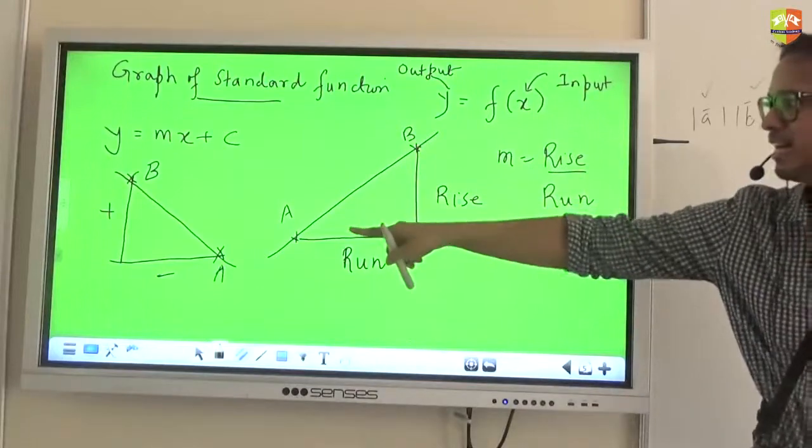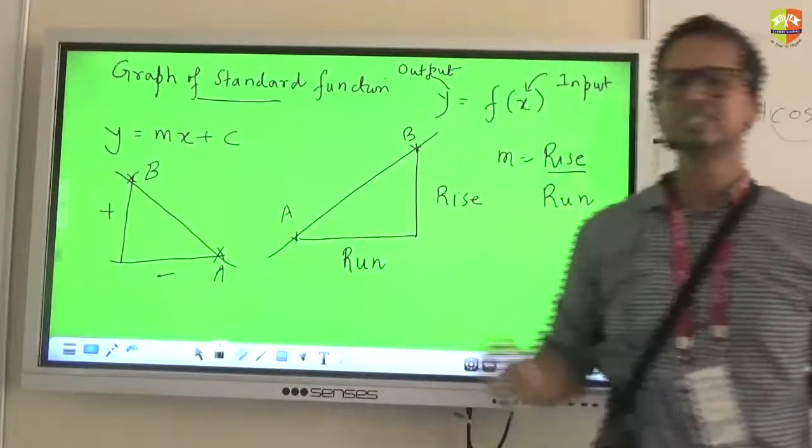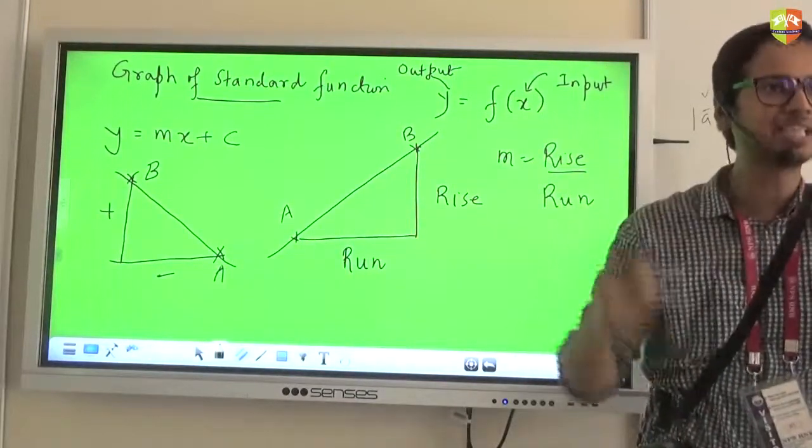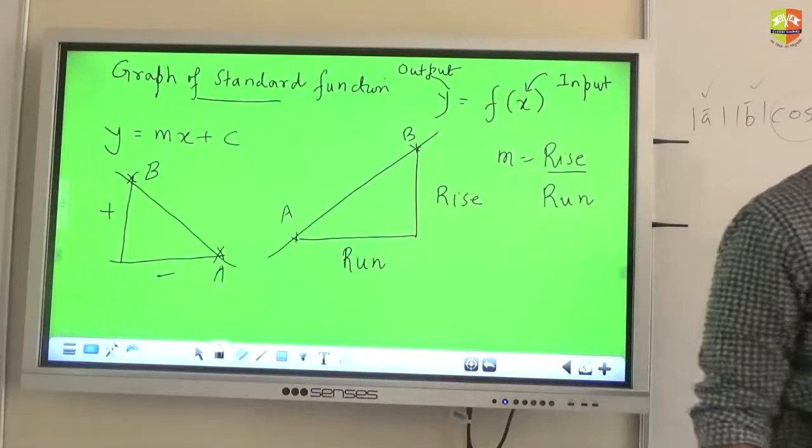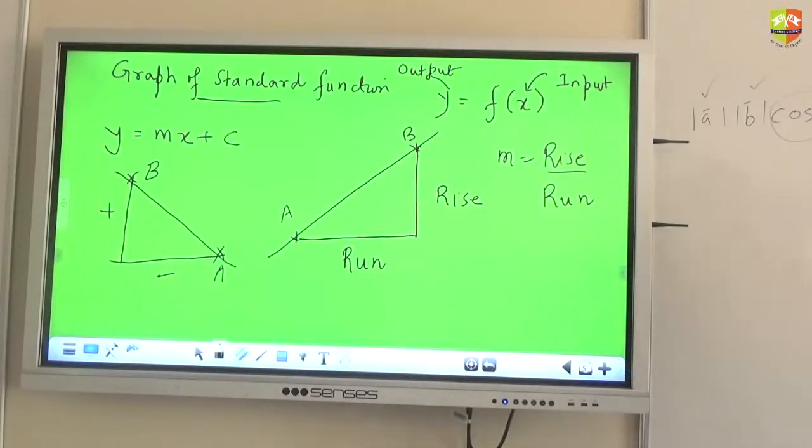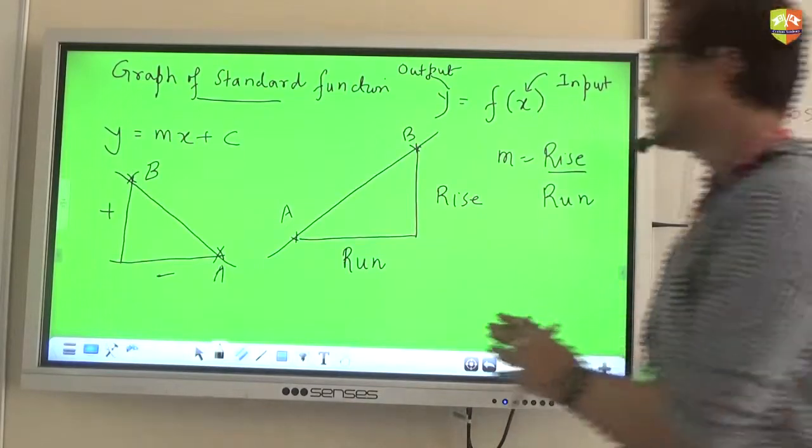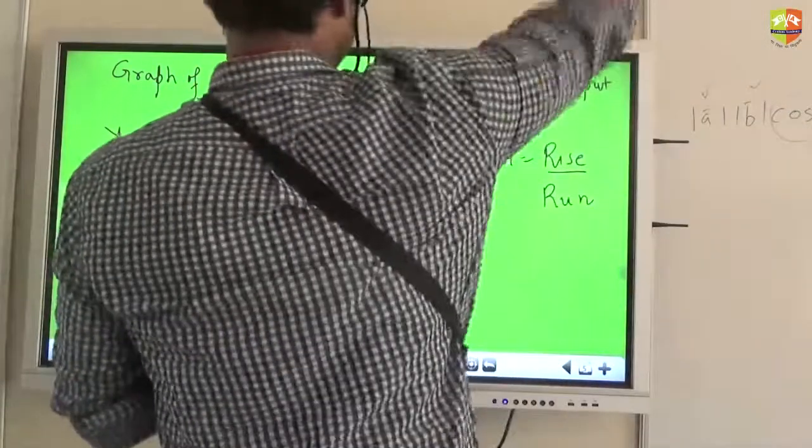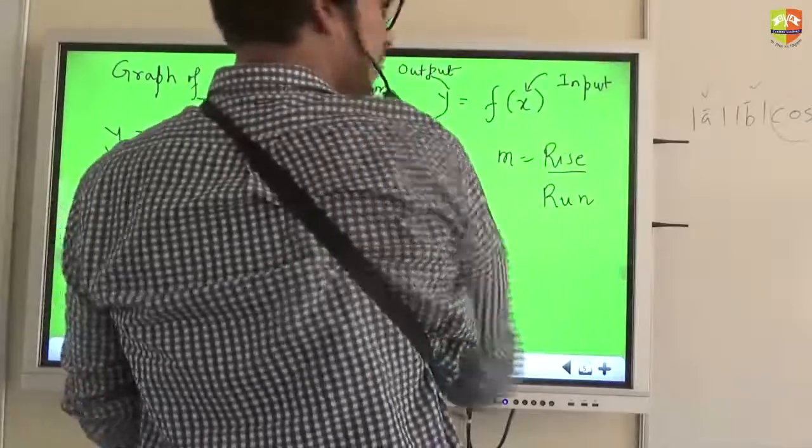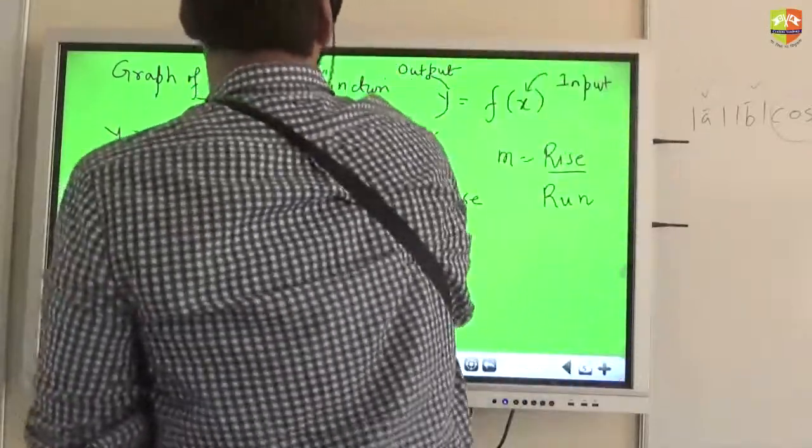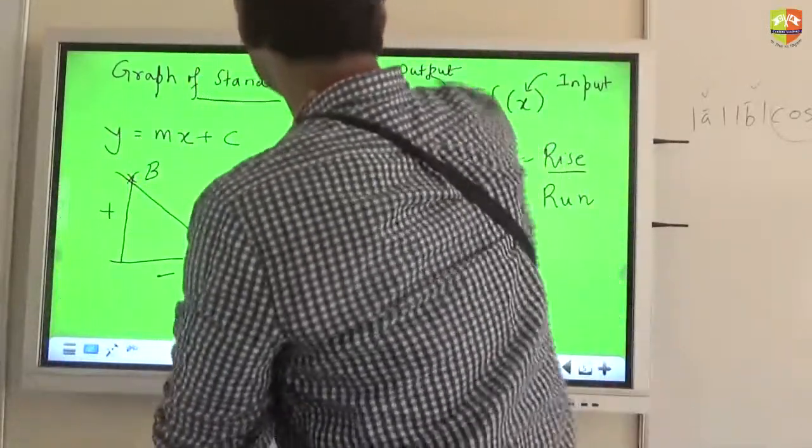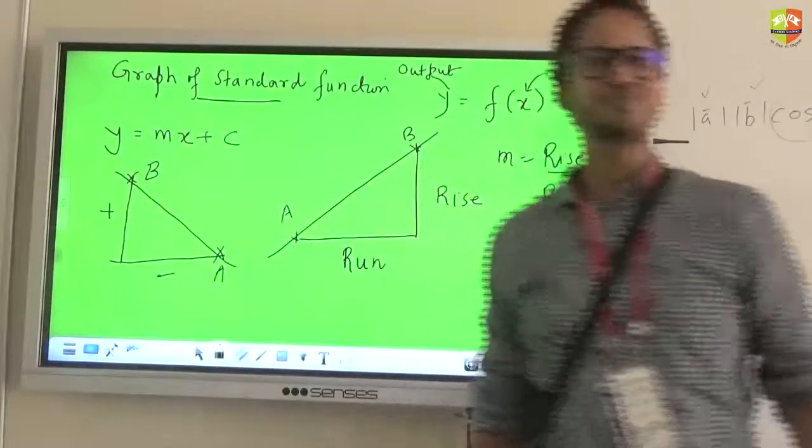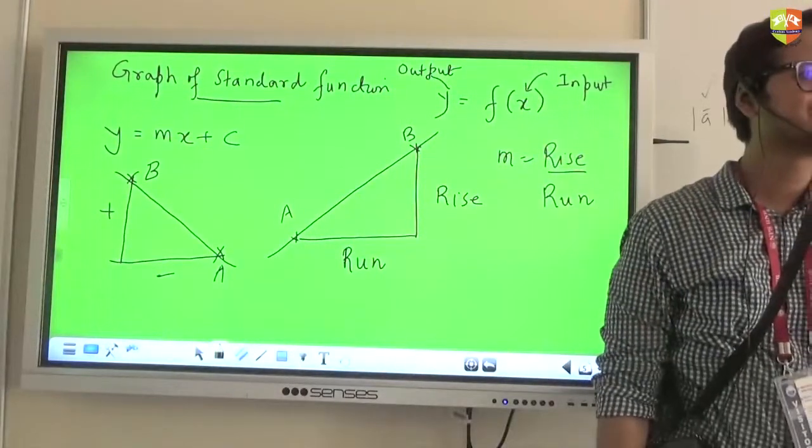And this is my point A and this is my point B. So when I go from A to B, when I go from A to B, is my rise positive? Yeah. Run is negative. Run is negative. So this ratio will be negative or not? Yes or no? If I go from B to A, rise will be negative. But run will be positive. Again that ratio will be negative.